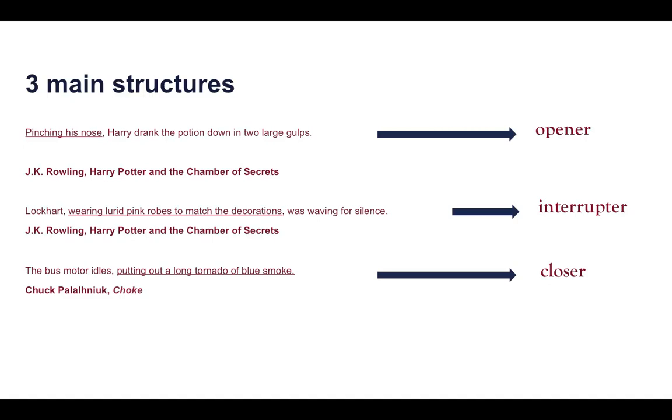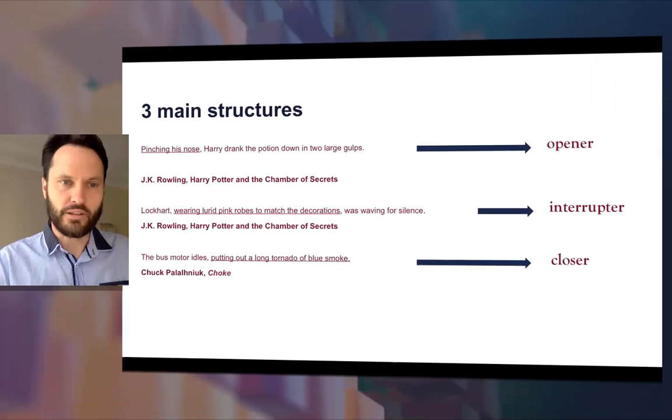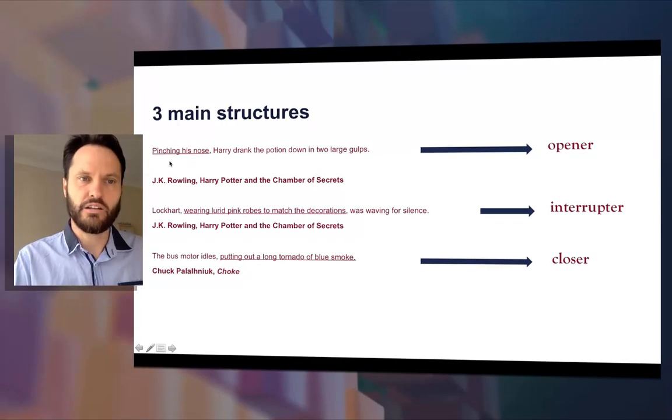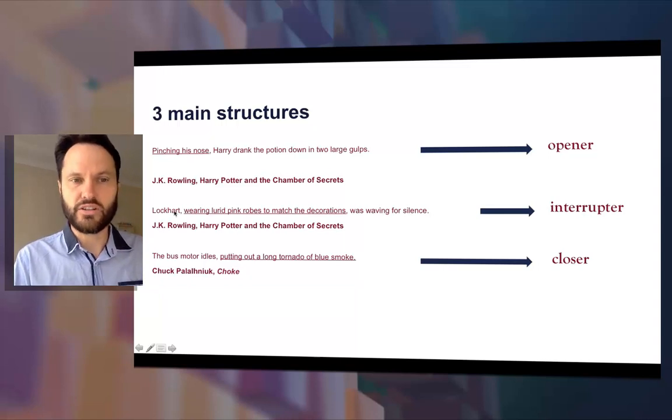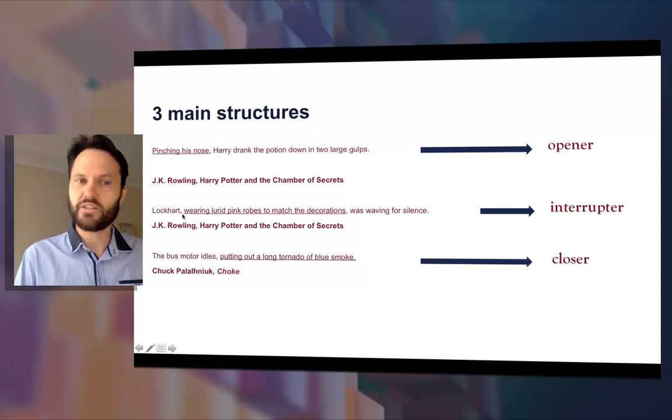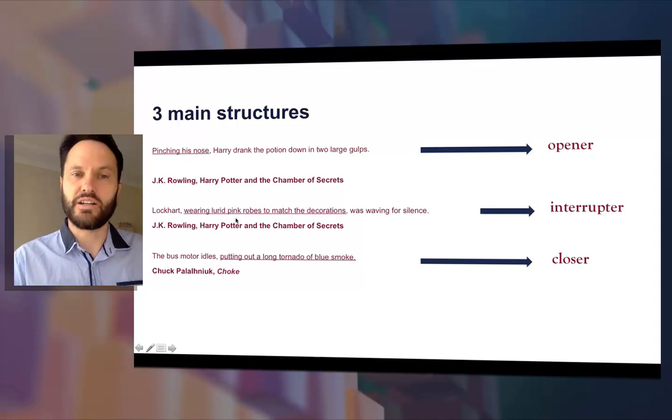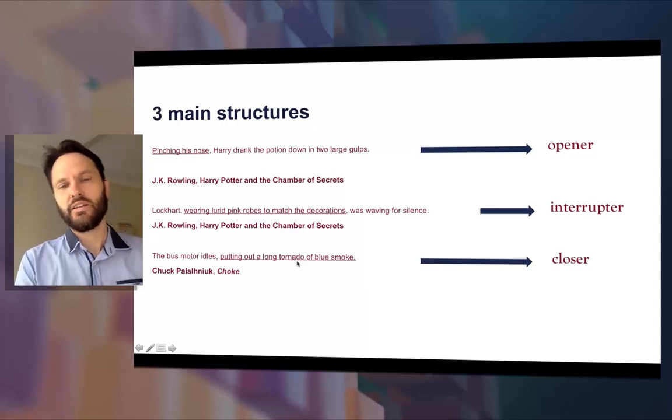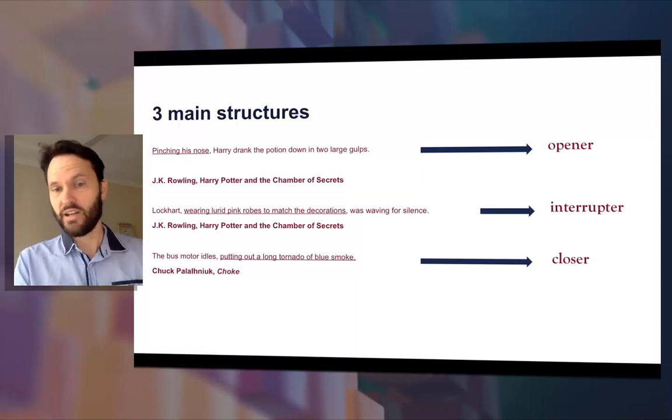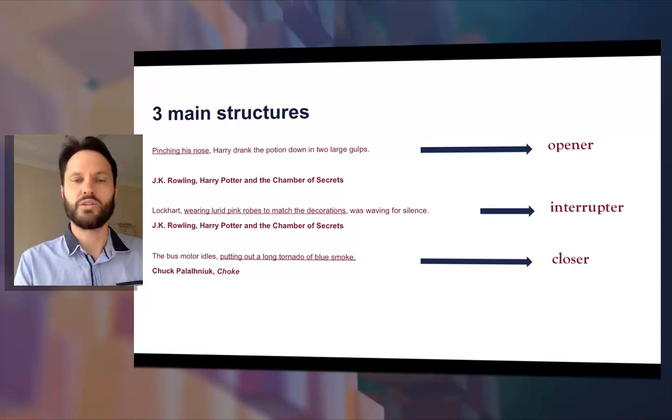So just recapping that: we have these three different structures. You can use the -ing as an opener to extend the detail, we can use it to interrupt immediately after the subject with an -ing phrase which again extends the detail, or you can use it as a closer towards the end of the sentence. The two easiest I'd say are the opener and the closer. They're probably the ones that I would experiment most with if I was you.